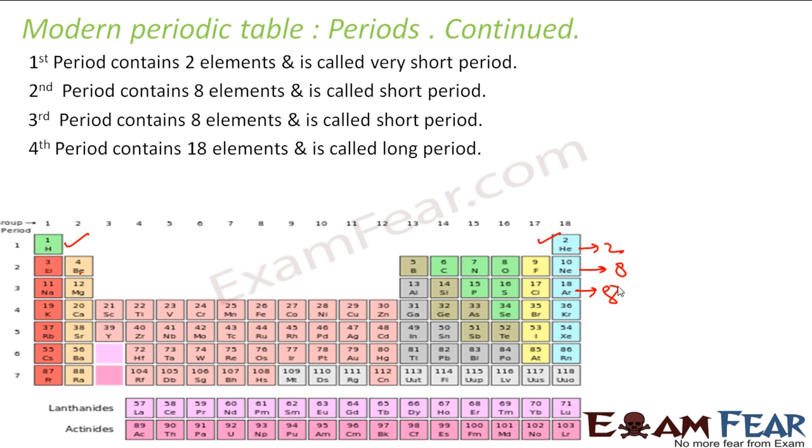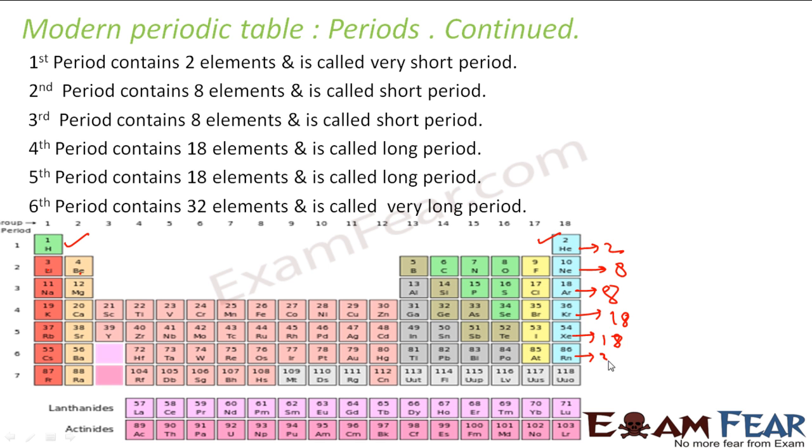And then you have a long one that is 18. This guy has 18. This guy also has 18. This guy has six, has 32. See, it keeps increasing. I mean, they are seven only. So the first period is a very short period. Then short and short. Then we have long and long. And then we have very long and very long. So we have seven periods.